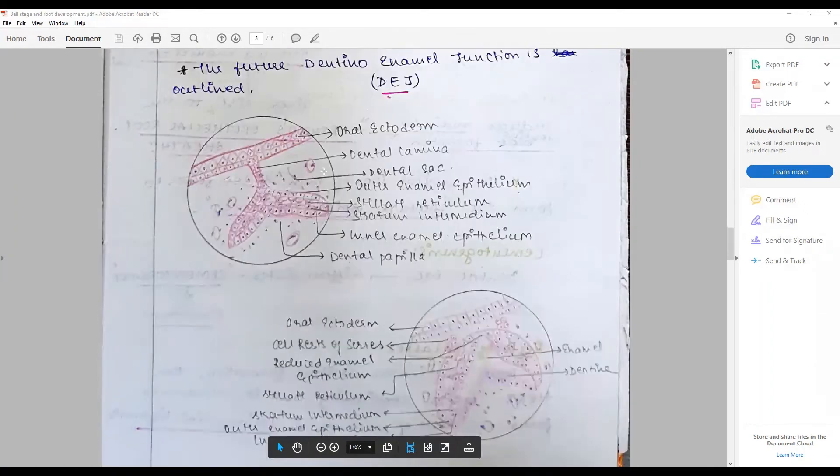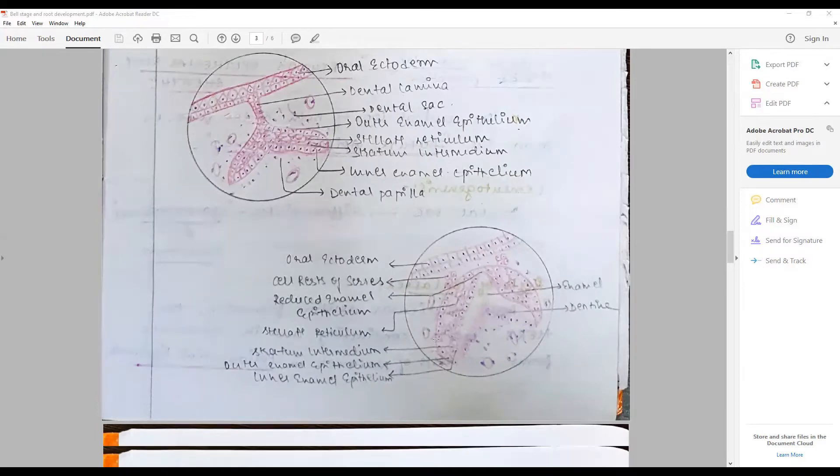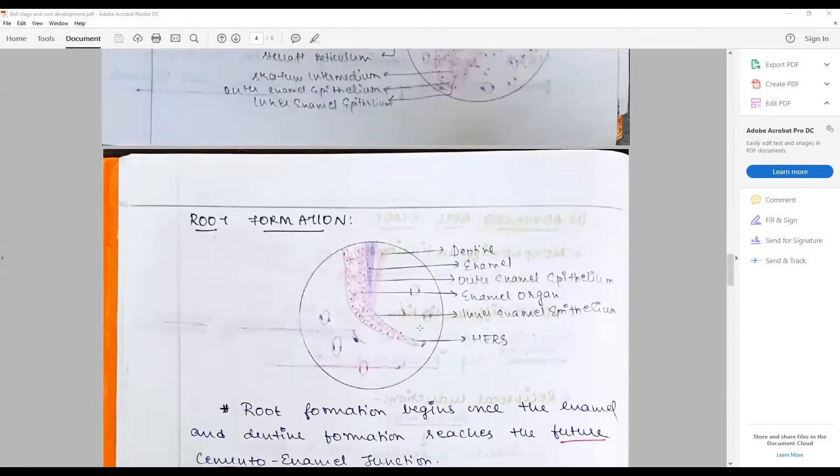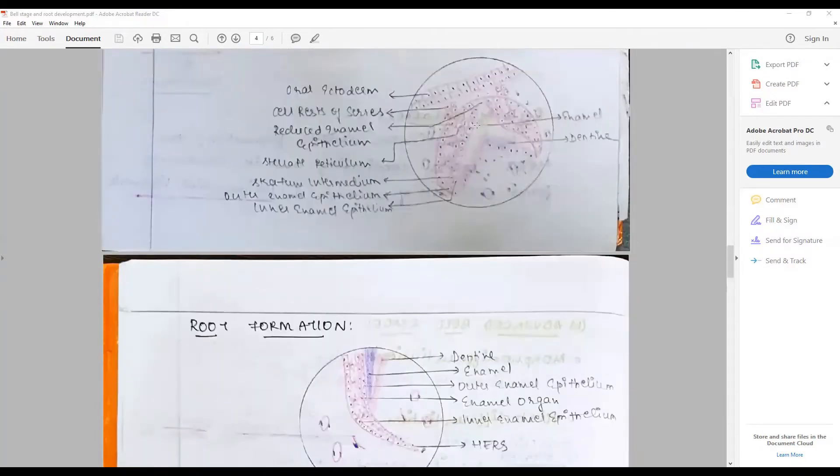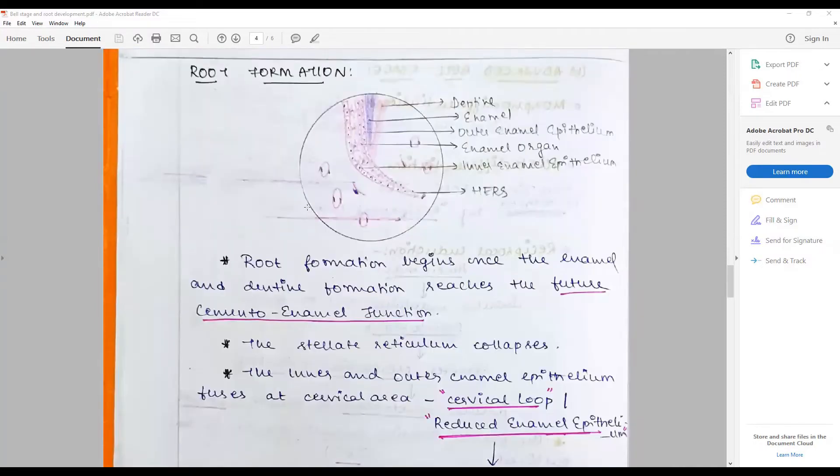Mark all the parts carefully. Though you have to complete the whole question in 20 to 25 minutes, you have to be very careful. Draw the advanced bell stage also. Talk about how the hard tissue is formed. The question answer is you have to finish this in 20 minutes. Root formation is another half of the question.